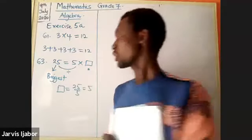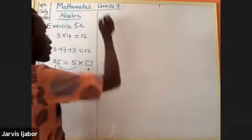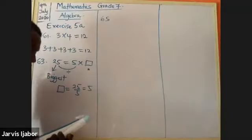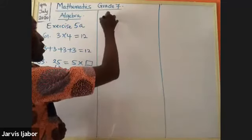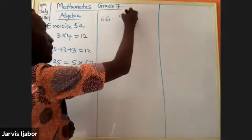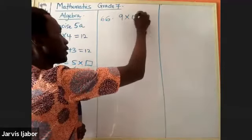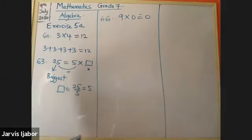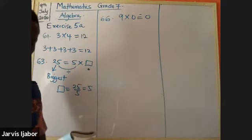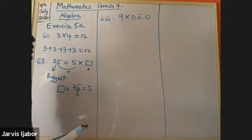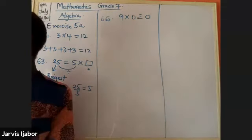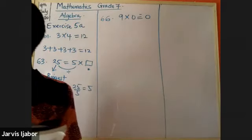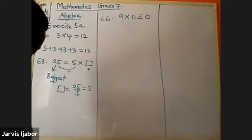What happens when you multiply a number by zero? The answer is zero. Anytime you multiply a number by zero the answer will be zero.